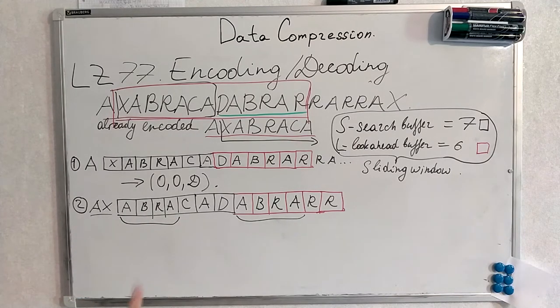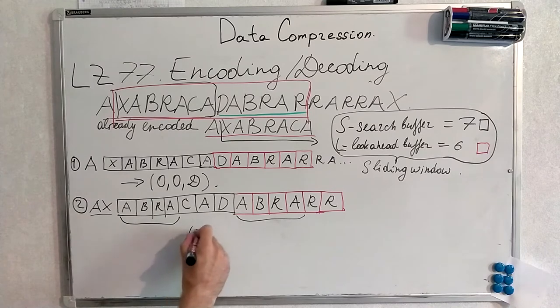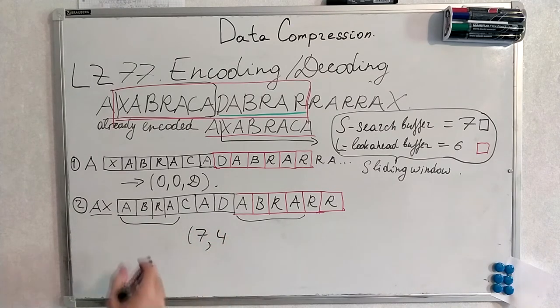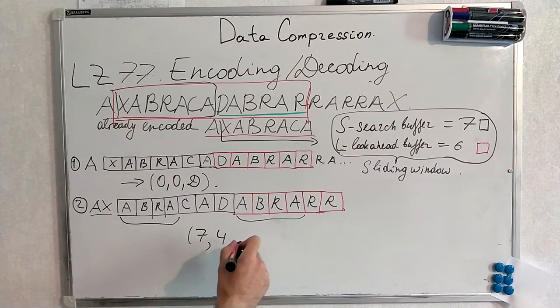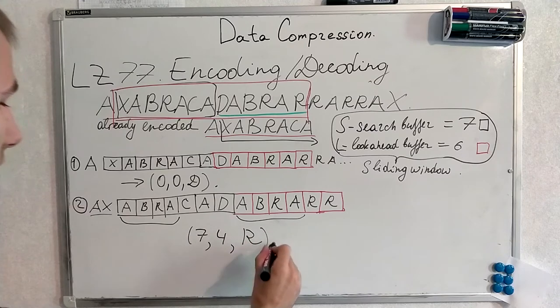What's the next match? Well, we see that Abra here is clearly here. Thus we encode 7. This is offset. 4. Length of the match. Abra, Abra. And next unmatched symbol. This is R.